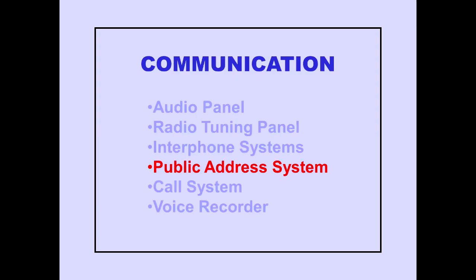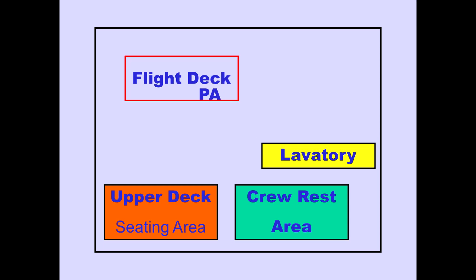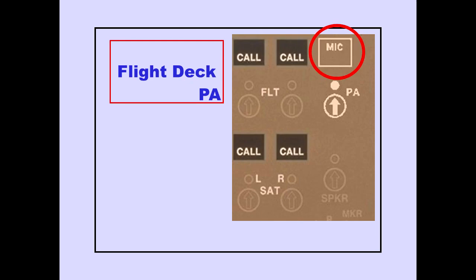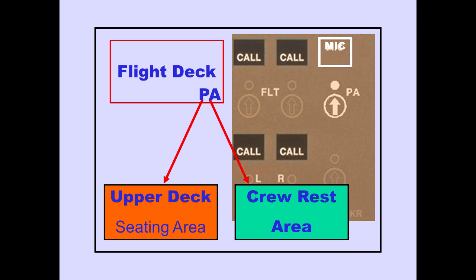Now let's look at the public address or PA system. PA announcements can be made to the upper deck seating area, lavatory, and the crew rest areas. Pushing the PA transmitter selector on the audio panel selects all PA areas.